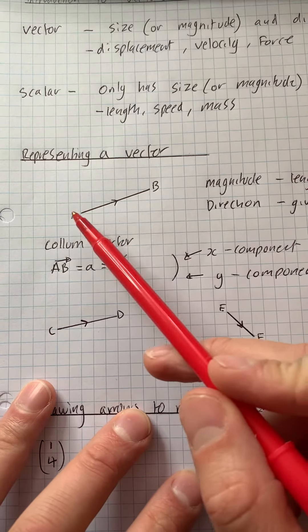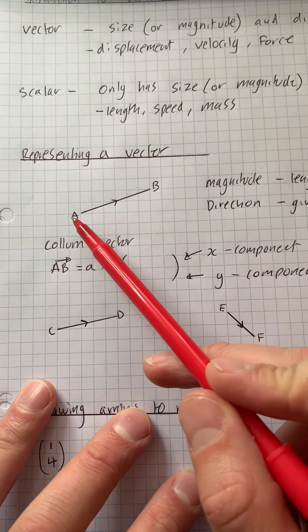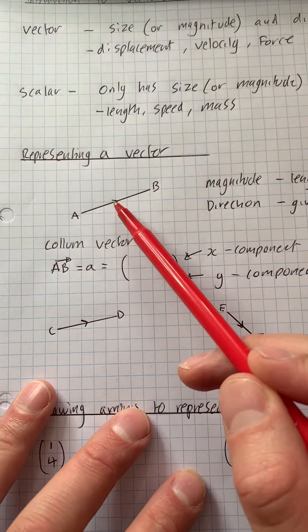Okay, so we represent a vector with a line. This is going from A to B, and we've also got an arrow.